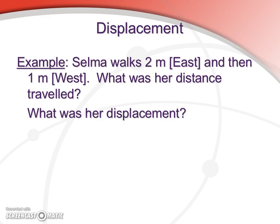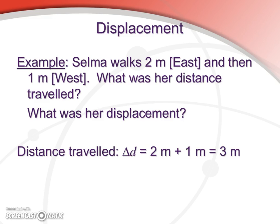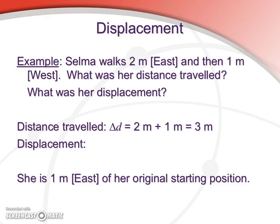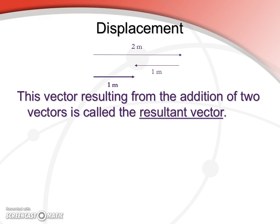If we take a one-dimensional case, we can take Salma walking two meters east and then one meter west. We can talk about her distance traveled — think of that as the effort — versus her displacement, the result. Her distance traveled: she went two meters east and one meter west, two plus one equals three, very simple. The displacement requires a little more interpretation, so let's do a scale diagram. She went two meters east, one meter west — the net result is one meter east. So she's one meter east of her original starting position. Her one meter east is a vector quantity, and this vector resulting from the addition of two vectors is called a resultant vector.